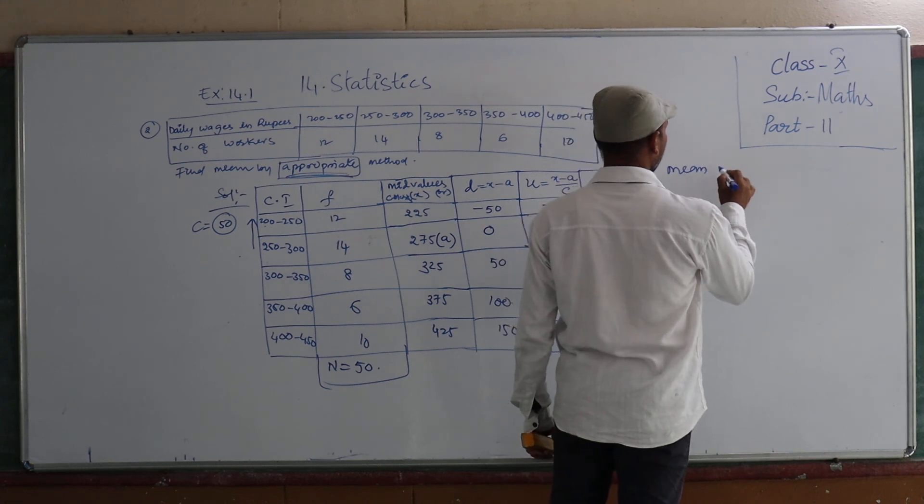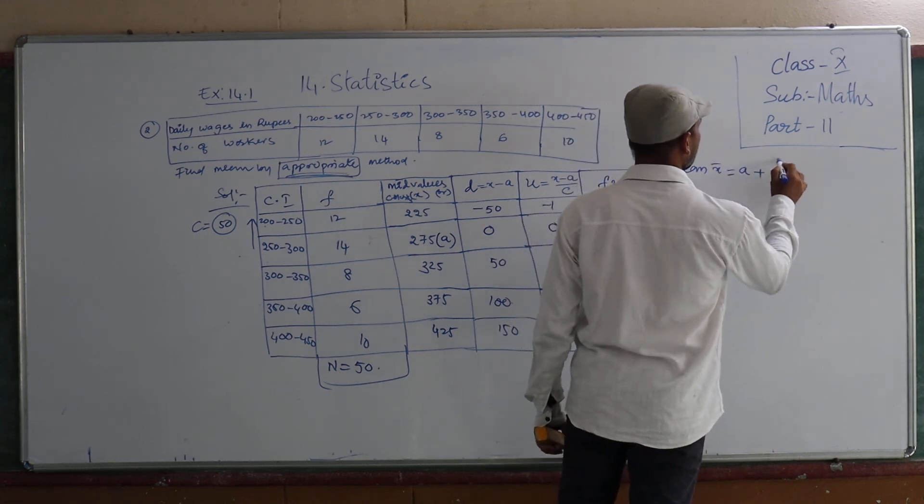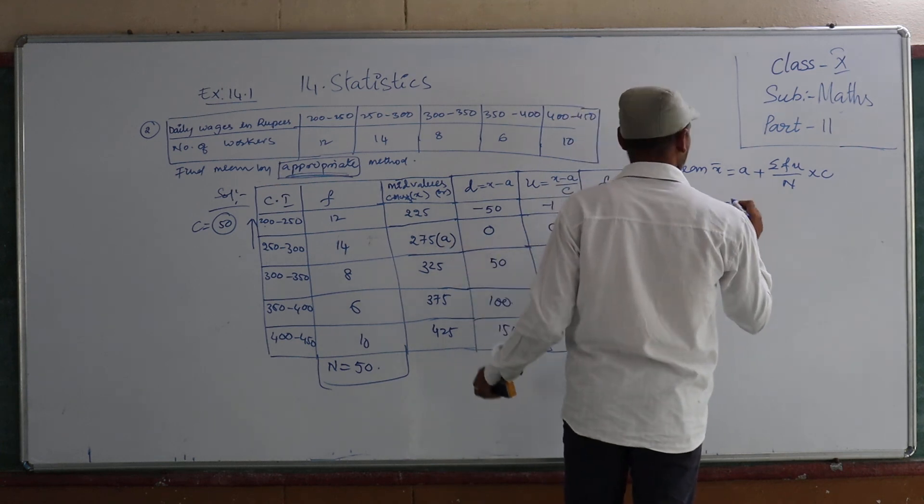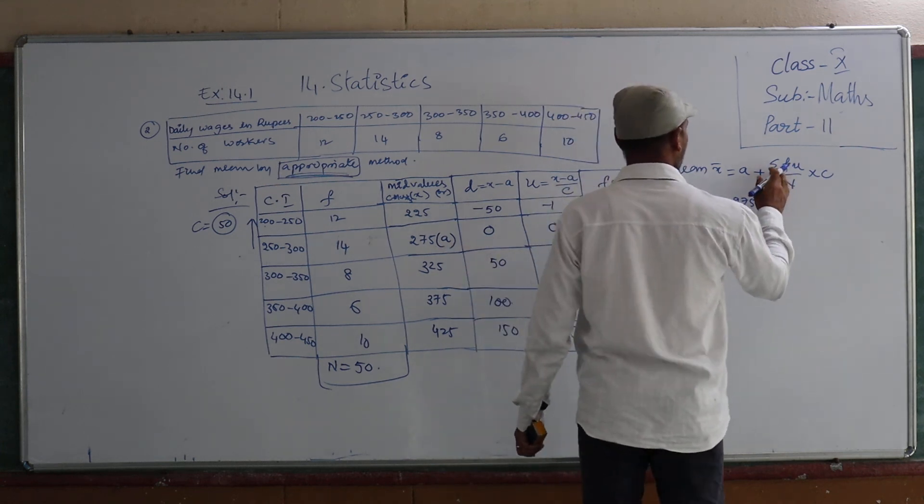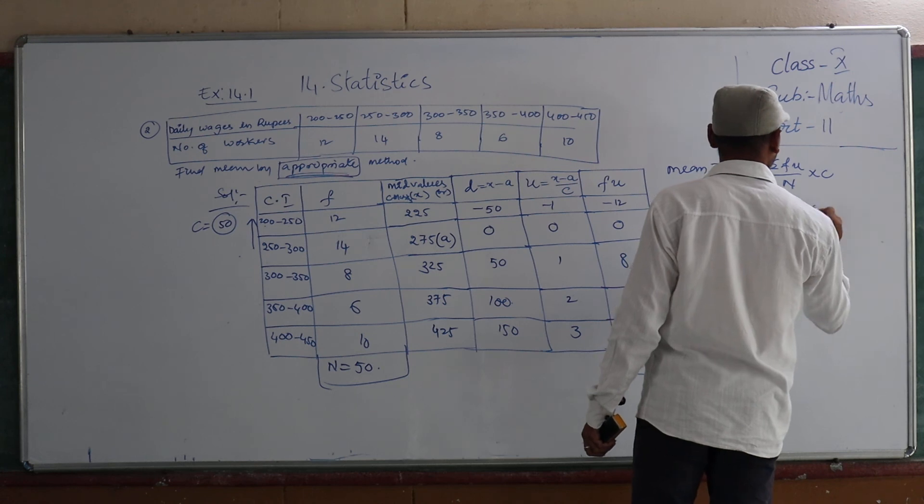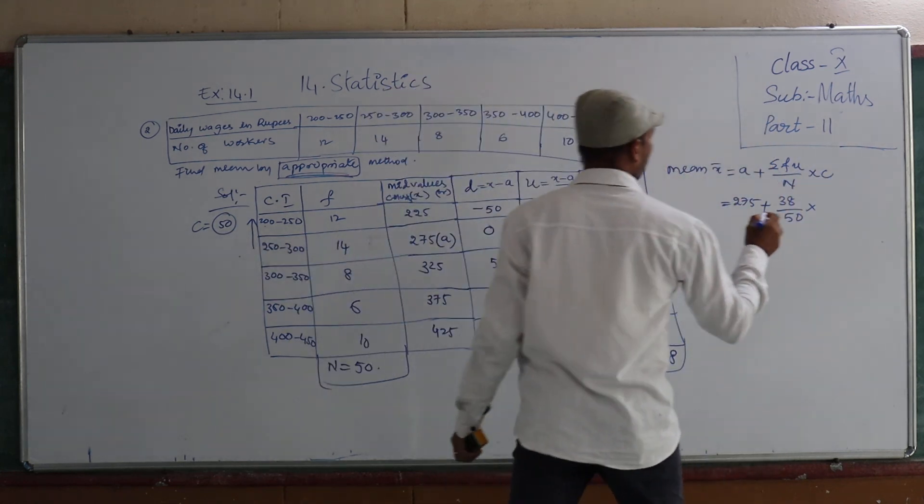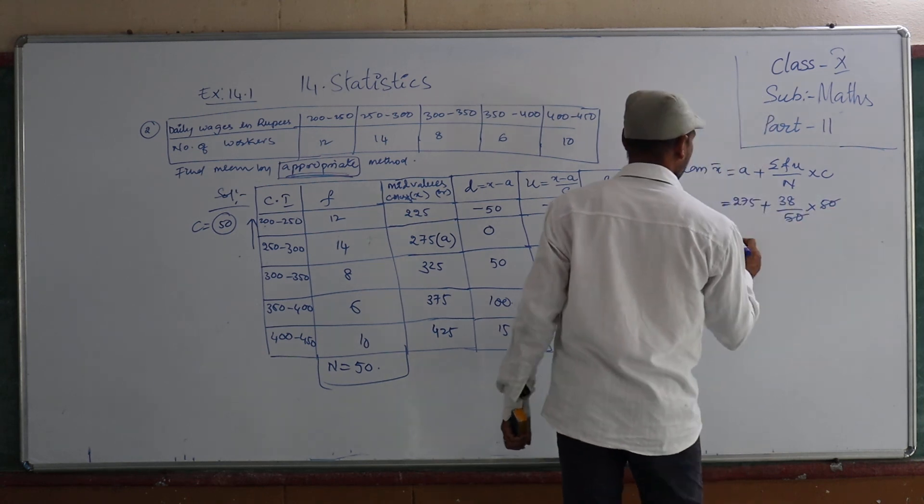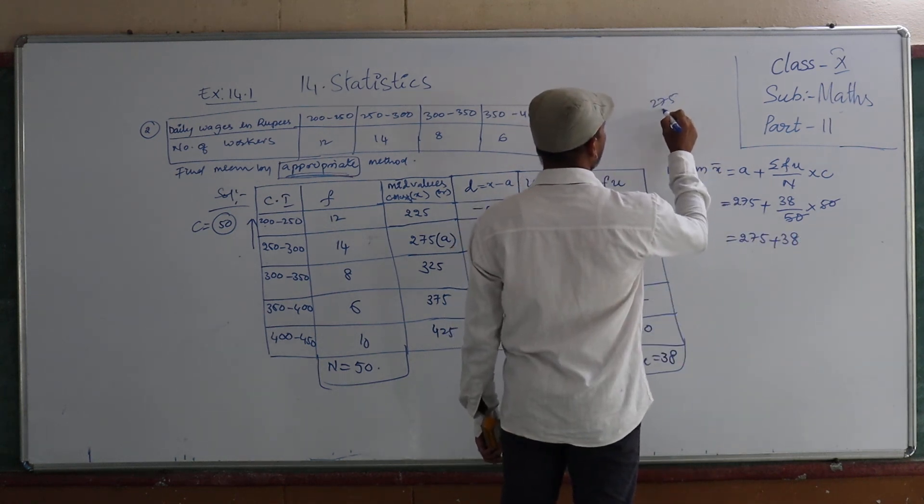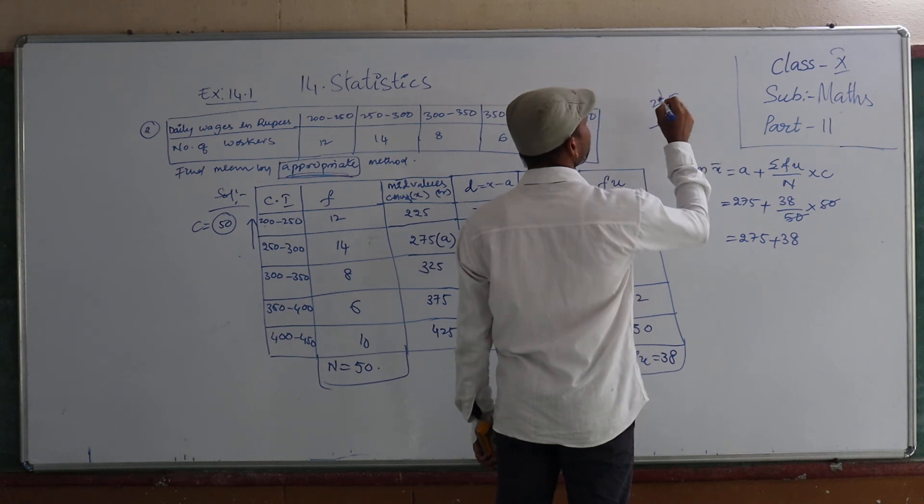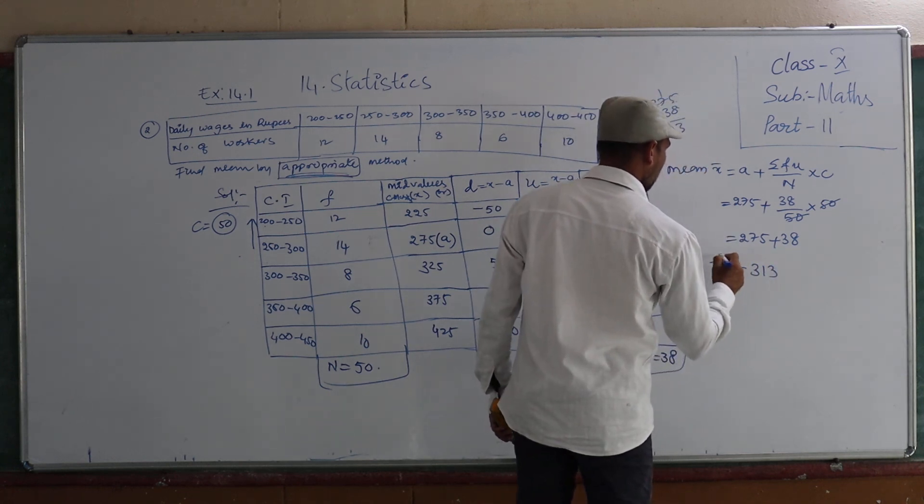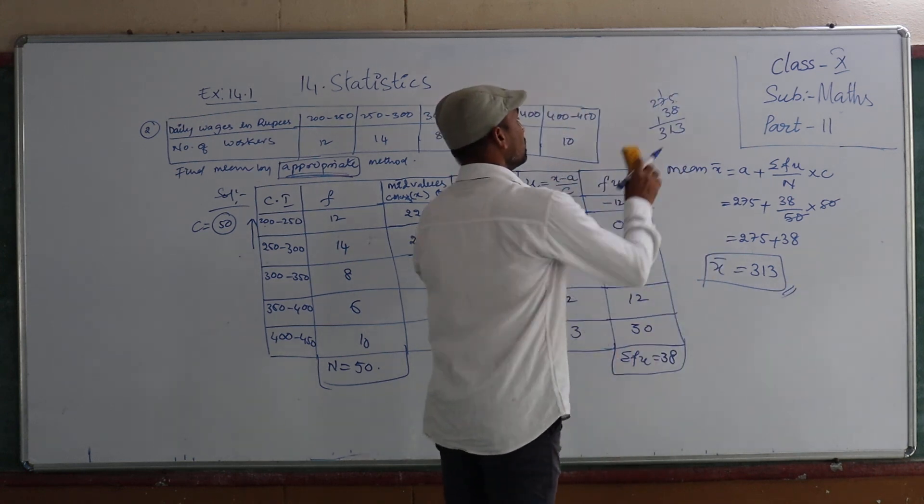So now find out mean. X bar is equal to A plus sigma fi Ui by N into C. Then A is 275 plus sigma fi Ui is 38 by N value 50, and class size also 50. So 50 cancels. 275 plus 38. So 8 plus 3 is 11, carry 1, so 313. So this is the answer, children.